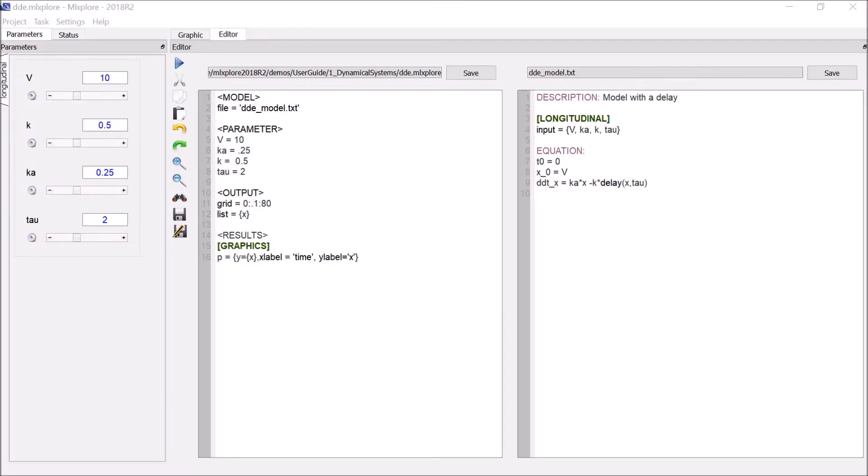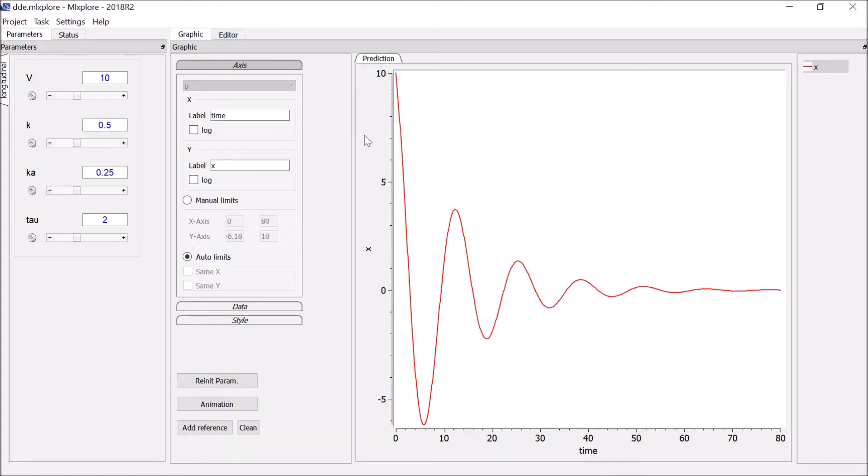Let's now simulate this model in MLexplorer, the application of the Monolix suite dedicated to model exploration. Given these parameter values, the simulation of the model is performed with a delayed differential equation solver and results in this curve. We can see here that the delay implements a negative feedback which constrains the stability of the system.